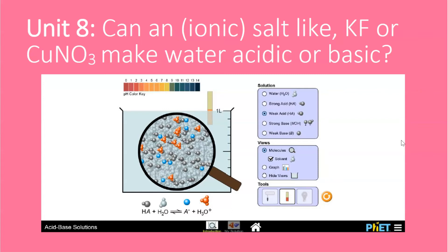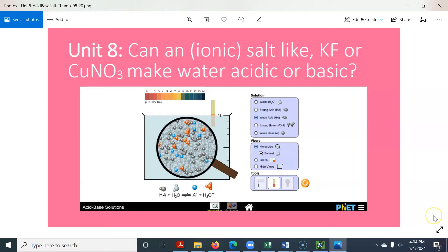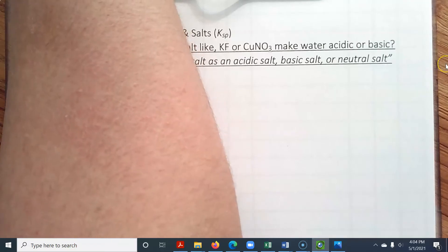Hi all. In this video I want to address an interesting question. Can an ionic salt like KF or copper nitrate, copper one nitrate, make water acidic or basic? At the surface it seems like an odd question because neither KF nor copper nitrate has protons or hydroxide ions, but we'll see that it can affect the acidity of a solution, thus changing its pH.